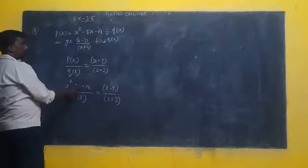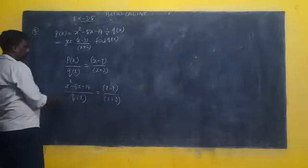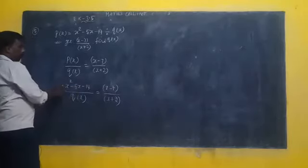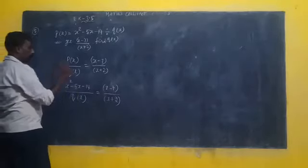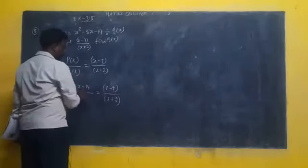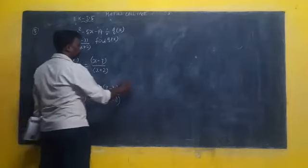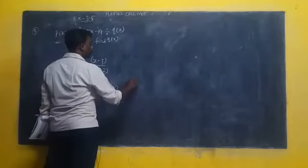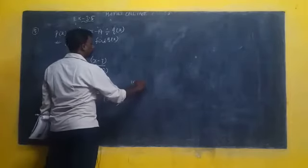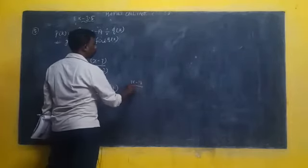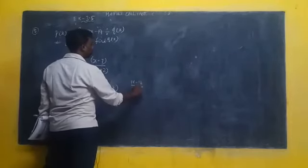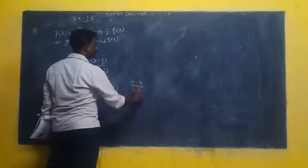We get the value: 2 degree P of X equal to F equal to 1. One is the constant value, one is the minus 4.